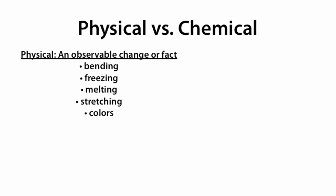Physical changes or physical properties are observable changes or observable facts. For example, bending, freezing, melting, stretching, or the fact that a certain object or compound or element is a color. These are all factual or observable changes. So these are all in the physical category.